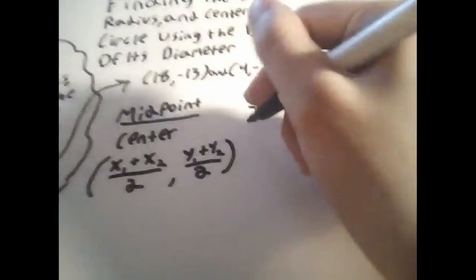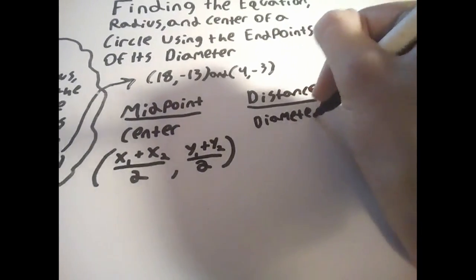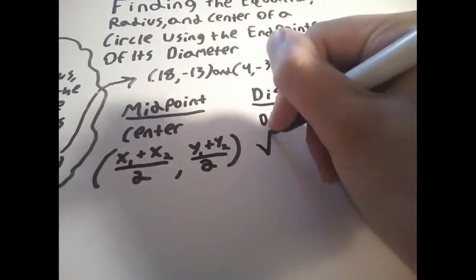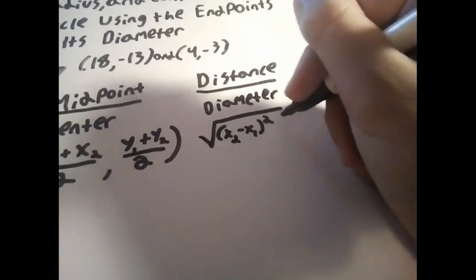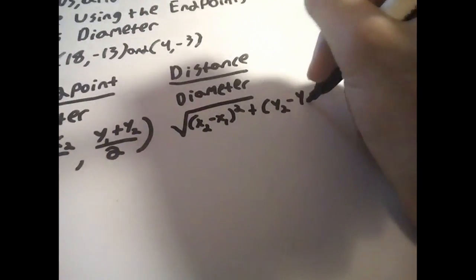The second formula is the distance formula. This formula is used to find the diameter of the circle. It goes as follows: the square root of x sub 2 minus x sub 1 squared plus y sub 2 minus y sub 1 squared.